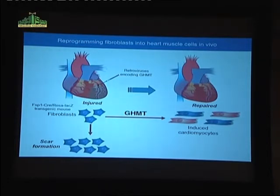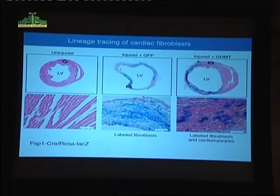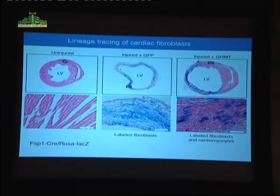The viruses we use for these experiments infect only proliferating cells, not post-mitotic cells — so they'll infect the fibroblast population but won't infect cardiac myocytes. The question is: can any of these labeled fibroblasts become blue cardiomyocytes? In a cross-section, you see little or no staining in normal fibroblasts. If one induces a myocardial infarction, you can see all these fibroblasts forming the scar have activated this fibroblast-specific marker — they're highly marked, with no marking of cardiomyocytes.